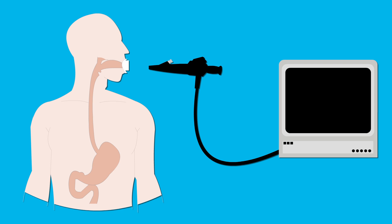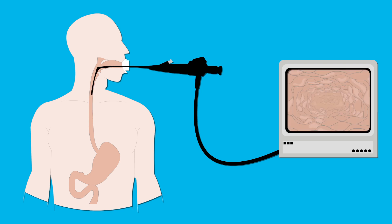A nurse puts a mouth guard into your mouth, then they put a flexible tube called an endoscope into your mouth and down your throat.